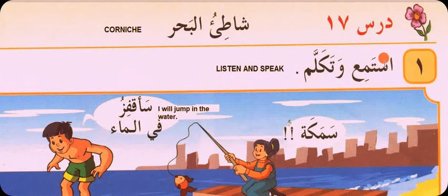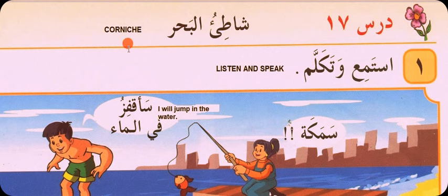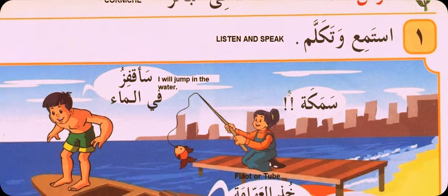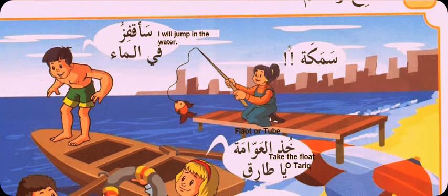Welcome children and students. We have reached lesson 17 — 'shati' means cornish or the beach. 'Isma wa takallum' means listen and speak. 'Samaka' means fish.